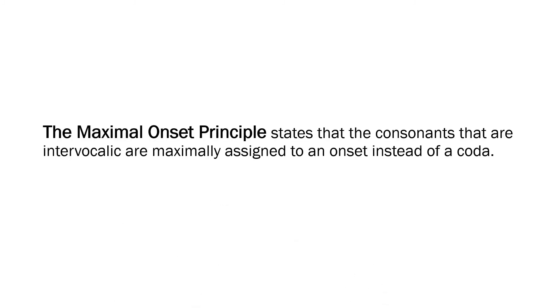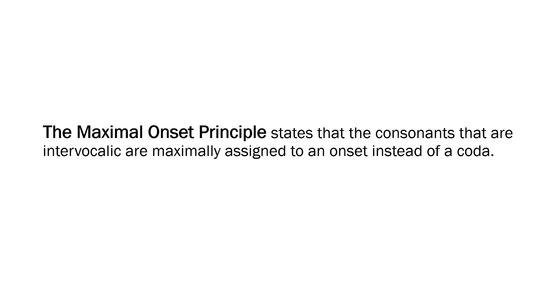The maximal onset principle states that the consonants that are intervocalic, or in between two vowels, are maximally assigned to an onset. So when you have a consonant between two vowels and you don't know what to do with it, then the best option would be to make it an onset instead of a coda.